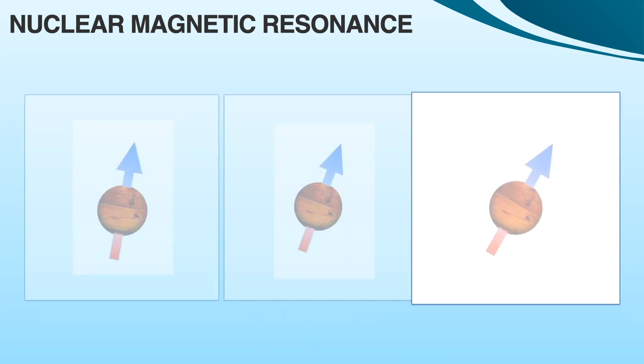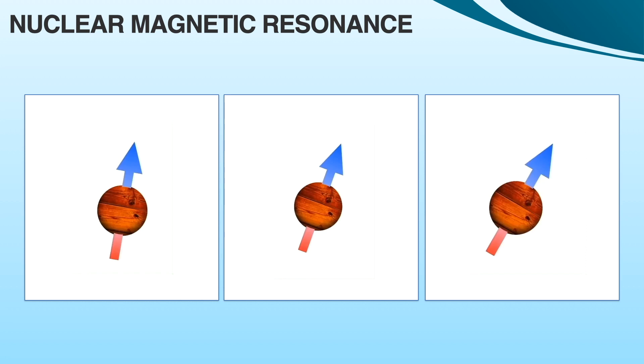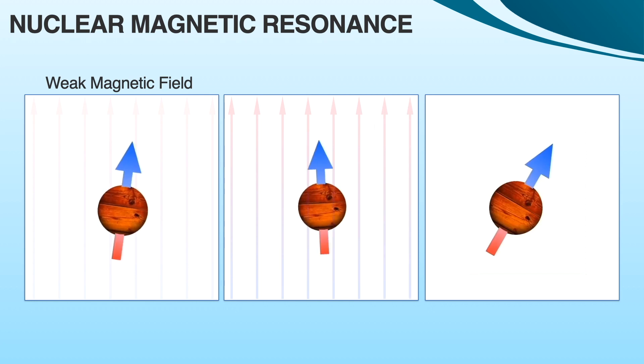Also, it can be noticed that the frequency of precession depends on the intensity of the external magnetic field. In weak magnetic field, nuclei have small precession orbit and less frequency, while in case of strong magnetic field, precession orbit and frequency increase.